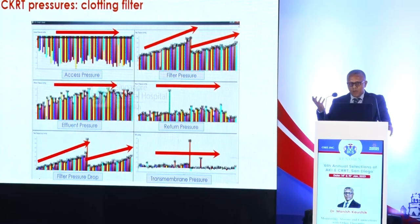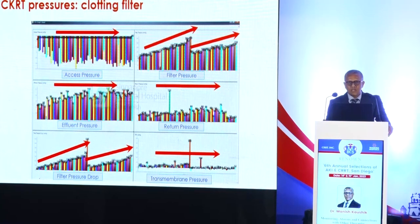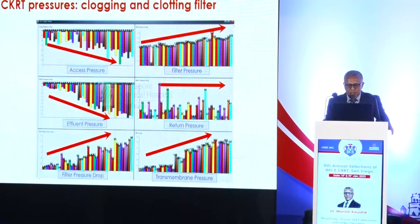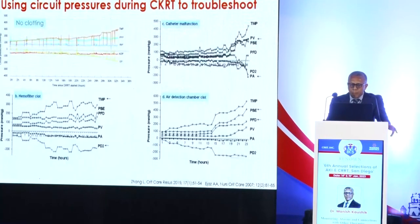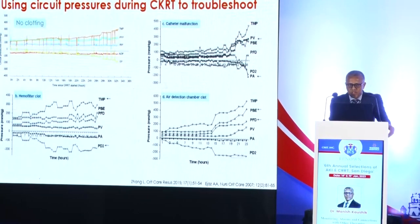This is a clotting filter: a steep rise in effluent pressure, transmembrane pressure, and filter pressure drop together. For repeated clotting filters of this type, I would go back and review vascular access, anticoagulation strategy, and filtration fraction before continuing with the next filter. There are also filters where both clogging and clotting happen together. The pattern of pressure monitoring has been studied to predict the mechanisms of filter failure — distinguishing a clotting filter from a vascular access problem or a coagulation problem.